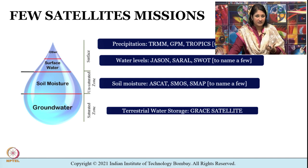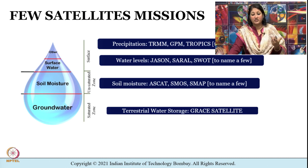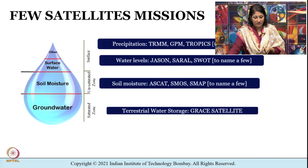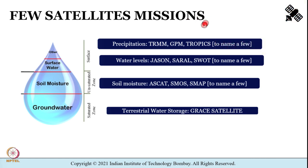These missions contain active sensors as well as passive sensors operating in the microwave region of the electromagnetic spectrum. To study water levels in rivers and lakes from space, there are missions like Jason, Surreal, and SWOT which operate in the microwave region. For soil moisture, there are missions like ASCAT (Advanced Scatterometer), SMOS (Soil Moisture and Ocean Salinity), and SMAP (Soil Moisture Active Passive).